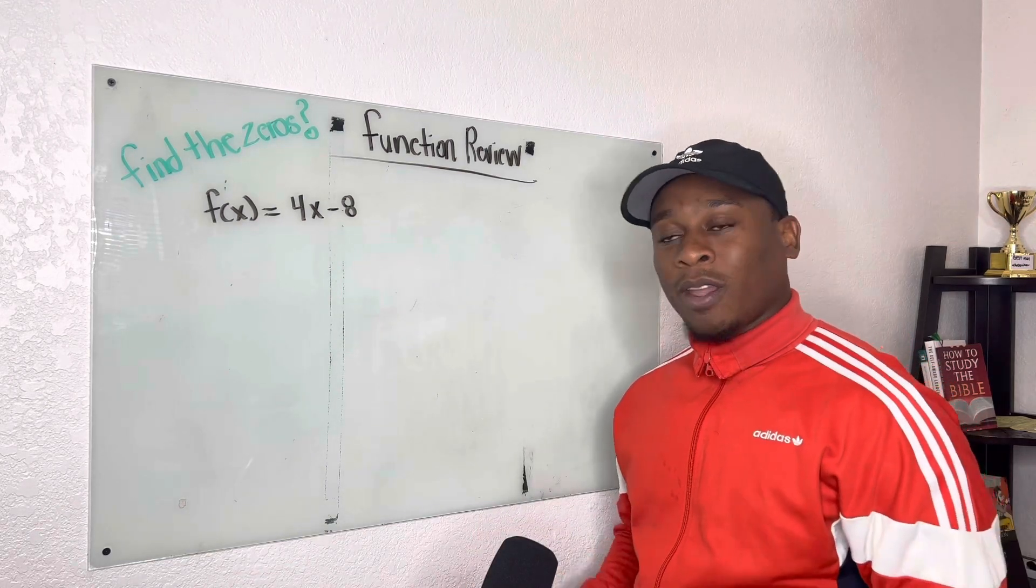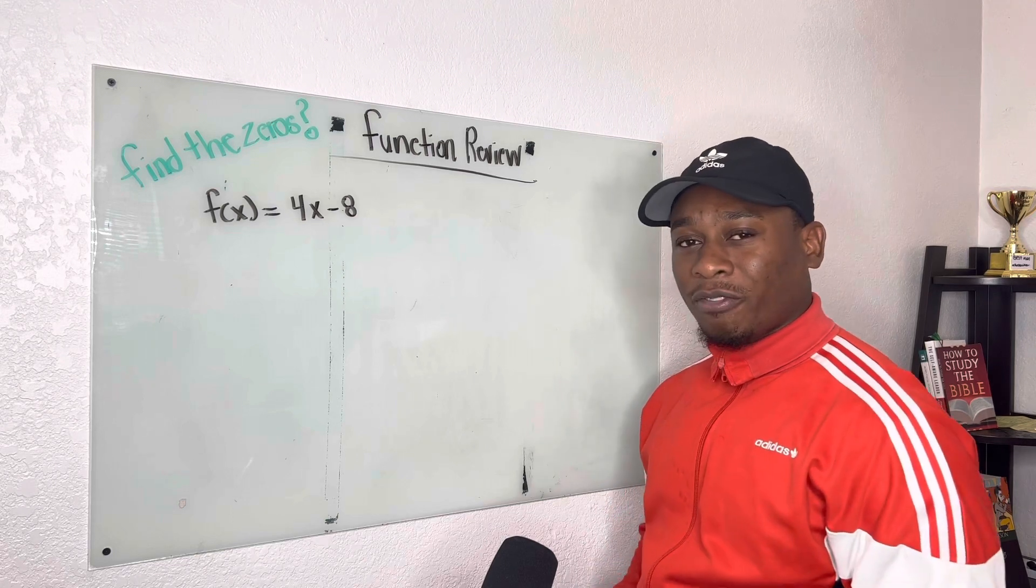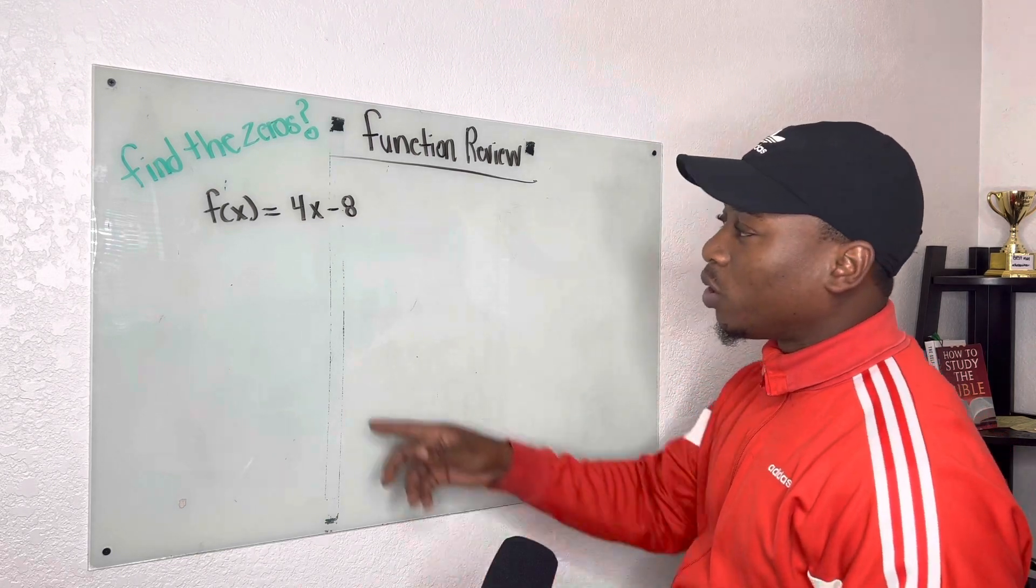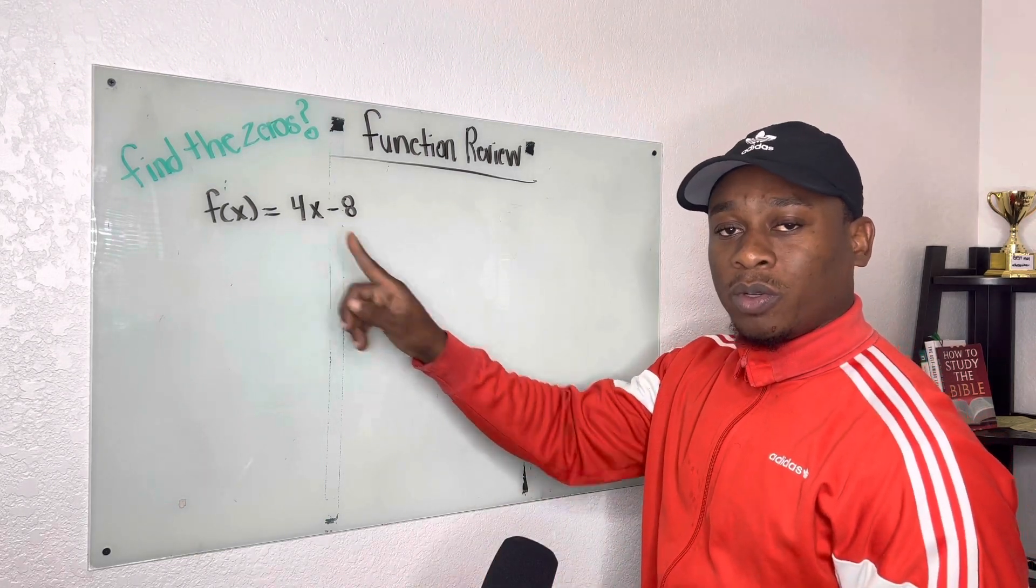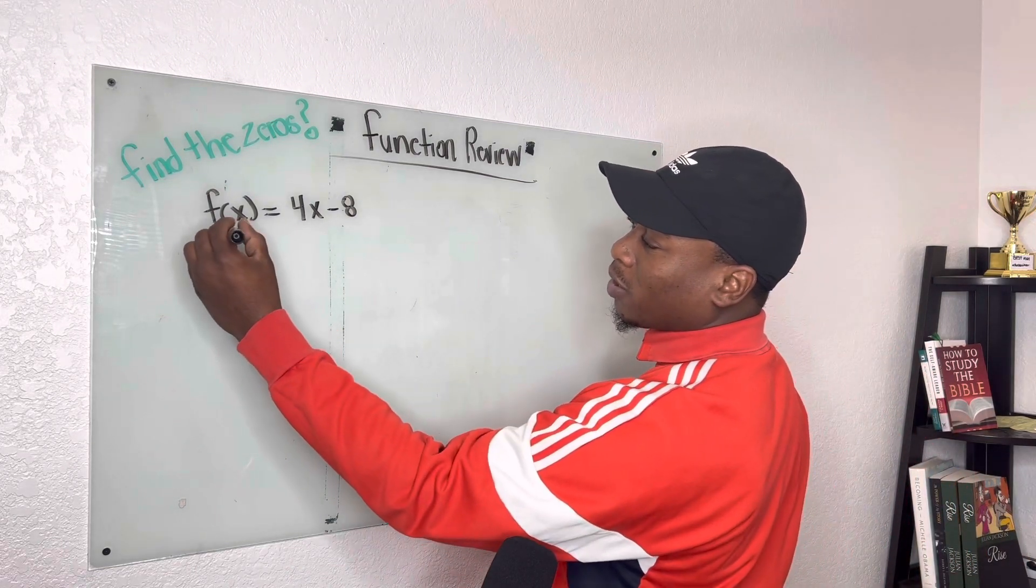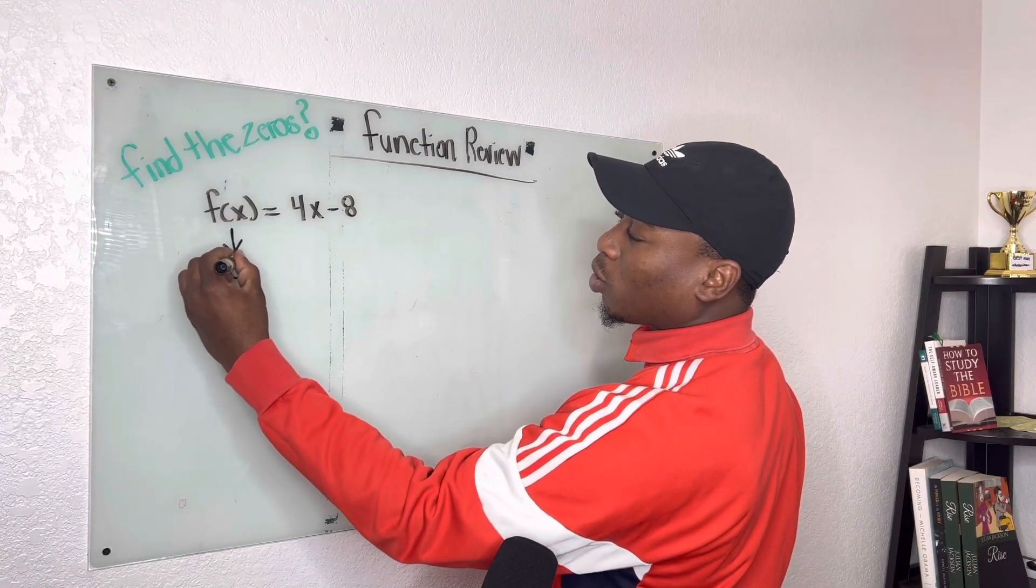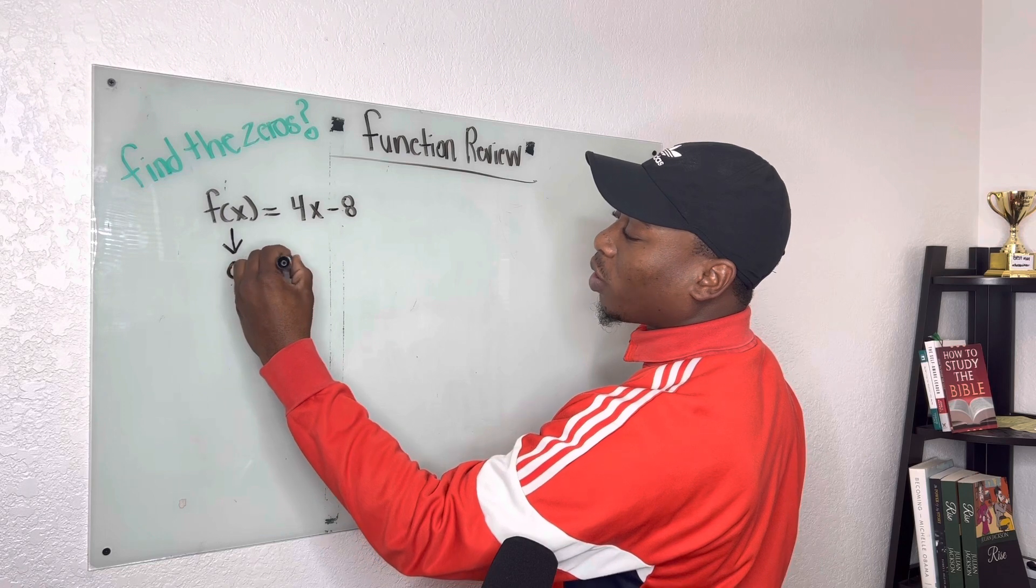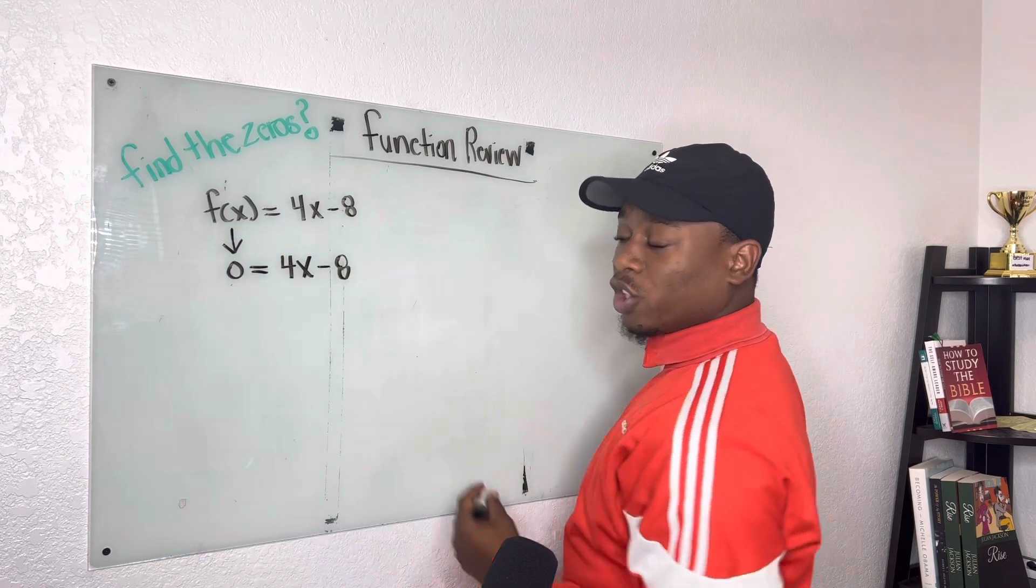So as we start off, when we're trying to find a zero, all we're doing is basically solving for the variable. So we're going to replace f of x with zero, and we are just going to solve like a regular equation.